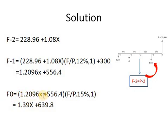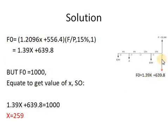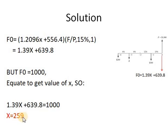F equals P from the previous step, multiplied by (F/P, 15%, 1), where 15% is the interest rate for this period. Now I have the equivalence of all these payments at year zero in terms of X. Since the deposits must be equivalent to the withdrawal, I equate F equal to $1,000 and solve to get X equals $259. This is the method we use when we have different interest rates at each period — you must go through it step by step.